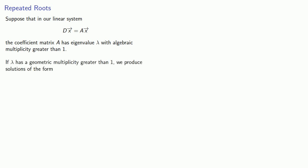If lambda has geometric multiplicity greater than 1, we produce solutions of the form c1e to power lambda t v1 plus c2e to power lambda t v2 and so on, where v1, v2, and so on are the linearly independent eigenvectors.